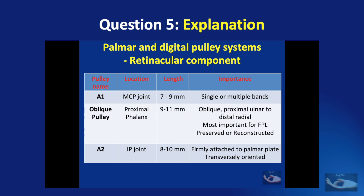The A1 pulley is located over the metacarpophalangeal joint of the thumb. The oblique pulley is over the proximal phalangeal region, and the A2 pulley is over the interphalangeal joint.